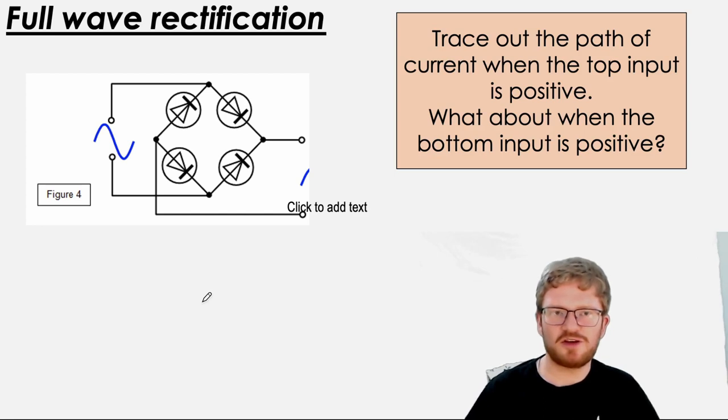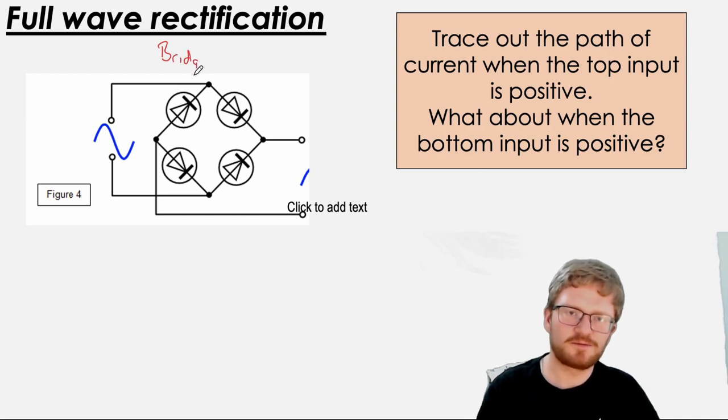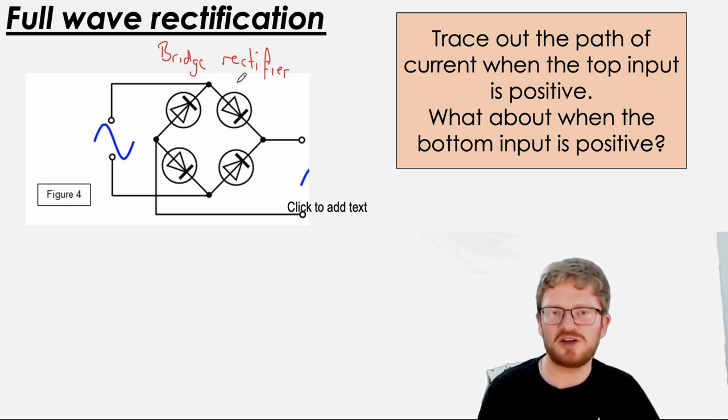So we've talked a lot about half-wave rectification. This circuit here, this is called a bridge rectifier. And some of you should hopefully remember this from IGCSE. This circuit will give us full-wave rectification. So again, it's pretty straightforward to think about it. If I have a positive up here, think about the path that the current will take.